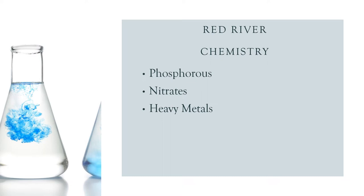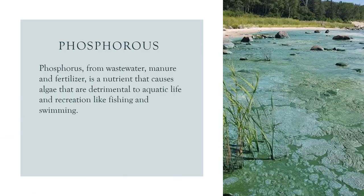When it comes to chemistry within the Red River Valley, there are three primary contaminants: phosphorus, nitrates, and heavy metals. In addition to higher levels of sediment, the Red River is seeing higher than expected levels of phosphorus. Much of this phosphorus comes from runoff from the land due to agricultural production. As this phosphorus flows downstream into Lake Winnipeg, it contributes around 2,600 tons of phosphorus to the lake.